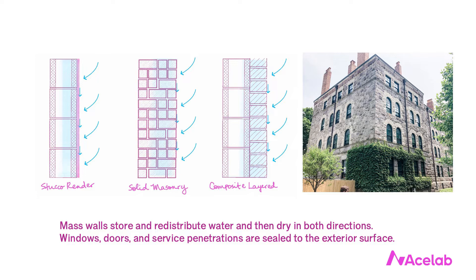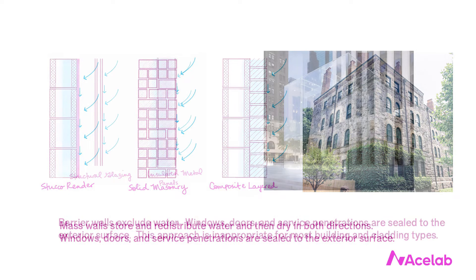Indeed, many of the world's most beloved buildings manage water in exactly this way. The classic example is the solid masonry wall. Masonry walls with stucco renders are also common, as are more modern composite walls with combinations of different kinds of stone and block. These walls are very durable and they're heavy — they literally weigh a lot. They also tend to cost a lot, in part because they're so heavy. Windows, doors, and service penetrations are sealed to the exterior surface.